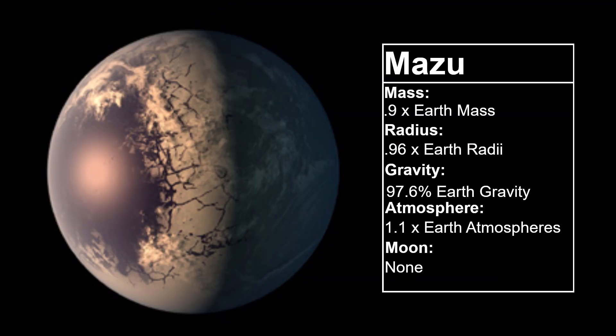Mazu is a water world with a comparable atmosphere to Earth, so it is a very hospitable place for life. Therefore, the lifeforms brought from Eden will have a very easy time turning Mazu into a home.